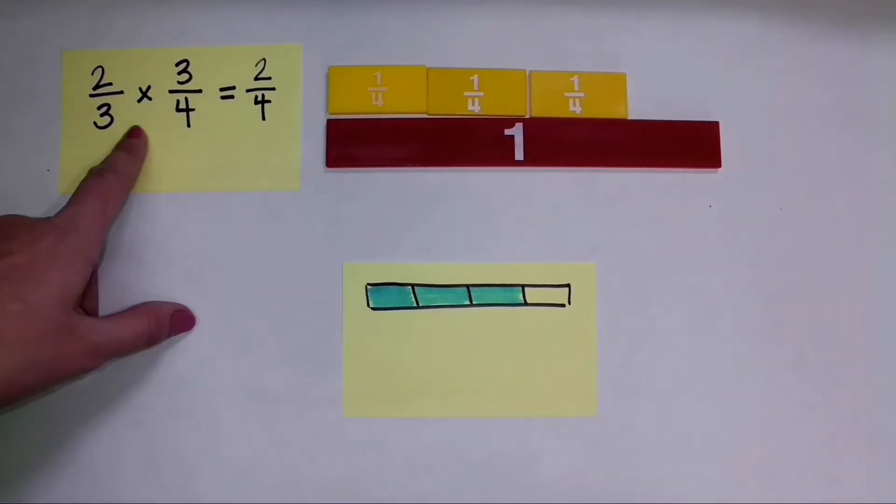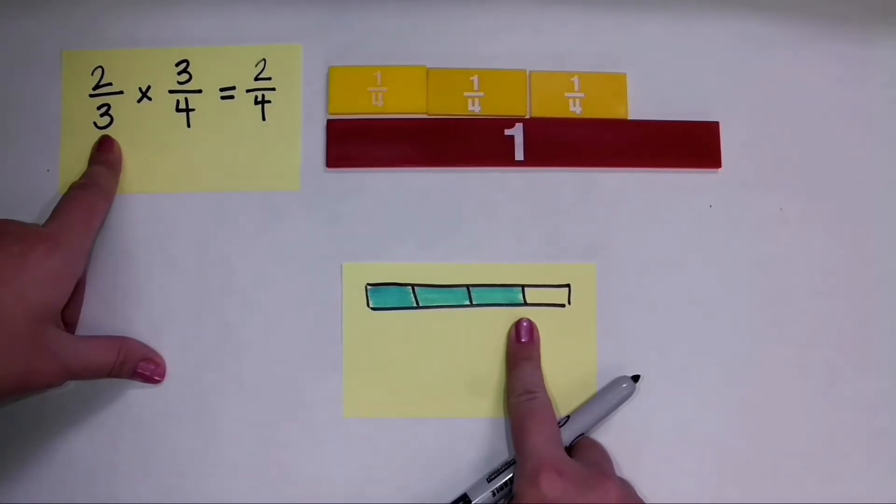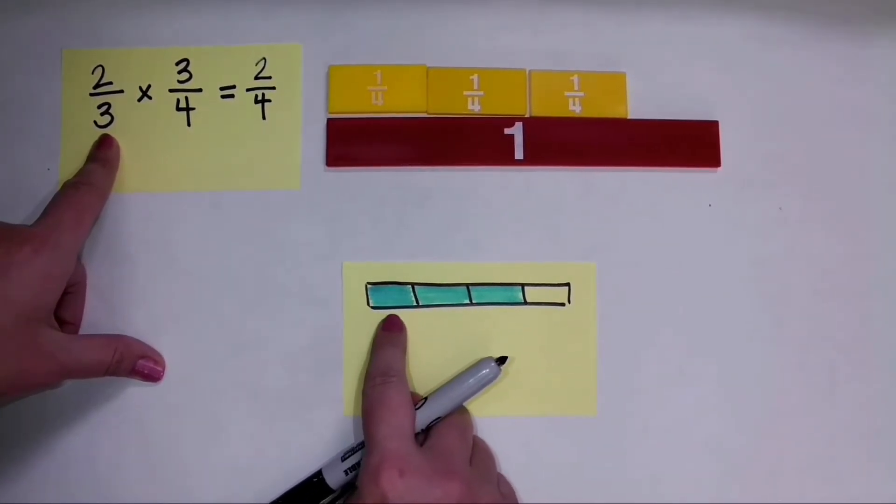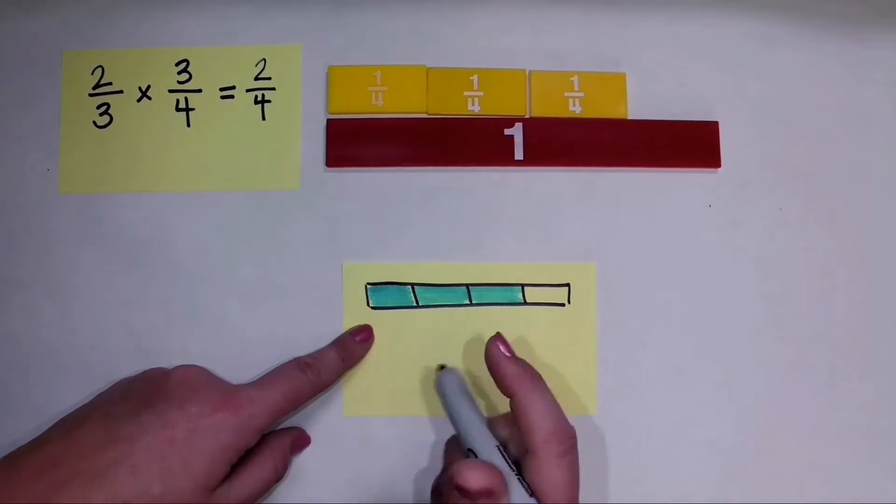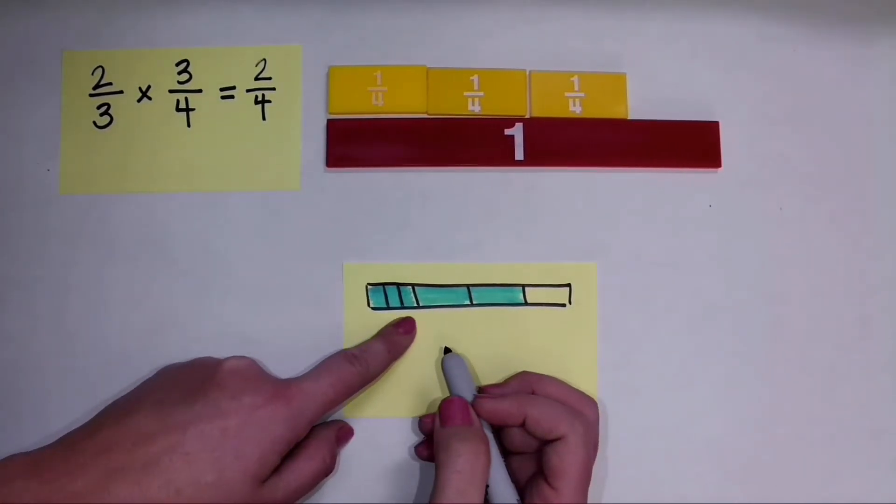Now I want to find 2 thirds of 3 fourths. But I could also think about this as finding 2 thirds of each of the 1 fourth pieces. So let me show you what this looks like. So here I'm just going to focus on this piece right here. And I want to find 2 thirds of this piece. So that means I divide that piece into 2 thirds.